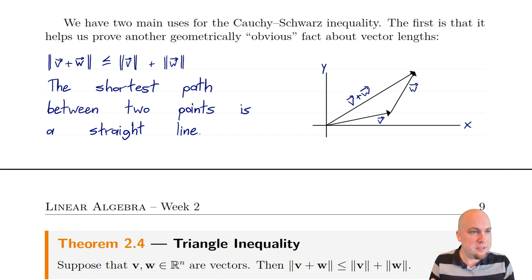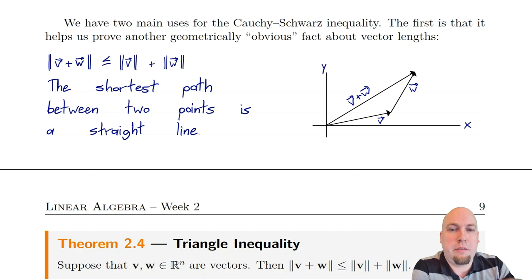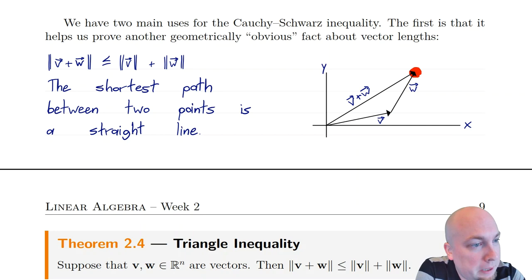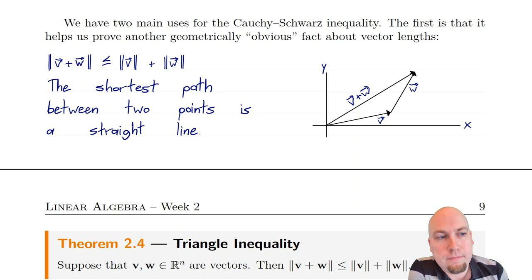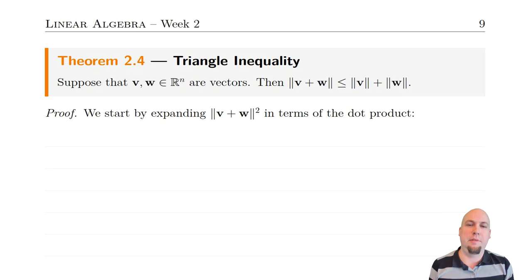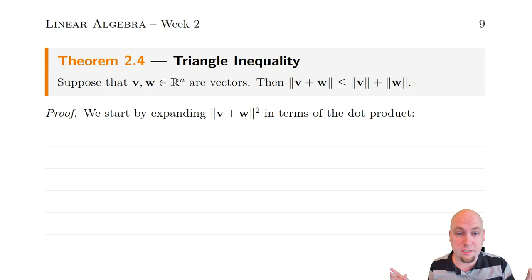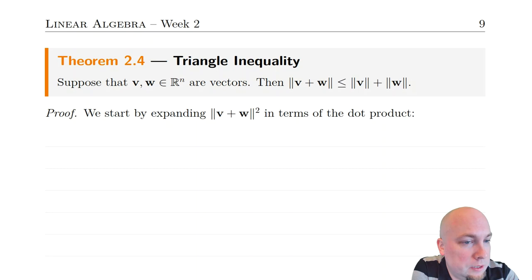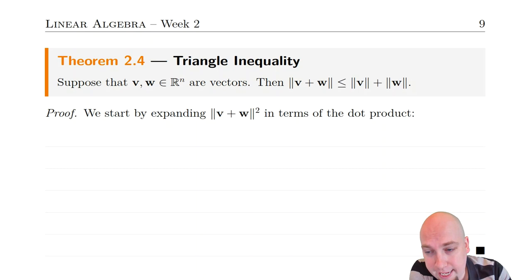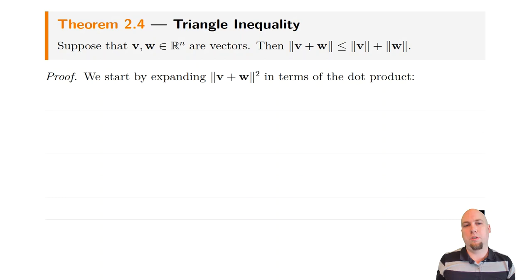This is our first mathematical proof of the statement that the shortest path between two points is a straight line. Let's state it more formally and prove it. Suppose you've got any two vectors in n-dimensional space — the picture is in two dimensions, but it's true in n dimensions. The theorem says exactly what we wrote: the length of a sum is less than or equal to the sum of the lengths. How do we prove it? It's a little tricky, but hopefully more intuitive than the Cauchy-Schwarz inequality at least.